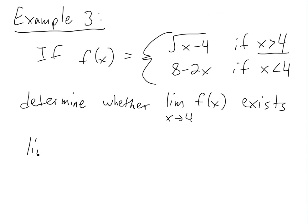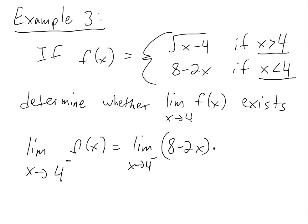From the left side — where x is less than four — we evaluate the limit as x approaches four from the negative side of eight minus two x. We plug in four: eight minus two times four equals eight minus eight, which equals zero.